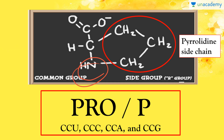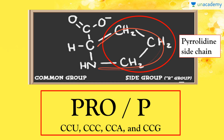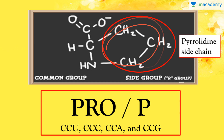Proline has a somewhat different structure from other amino acids in that it contains five carbon atoms. It has a secondary amine group, and the ring formed by the side chain attached to the amino group is known as the pyrrolidine ring or pyrrolidine side chain.